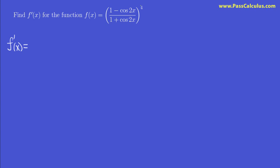But the first part is easy. The outermost function is power of 4. It'll come to the front. That'll stay the same. It'll be power of 3. And then we multiply by the derivative of what we ignored.